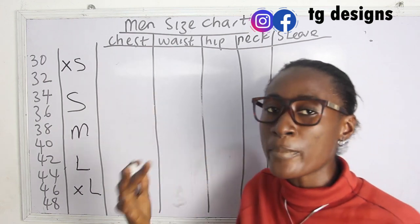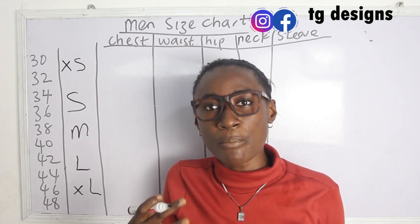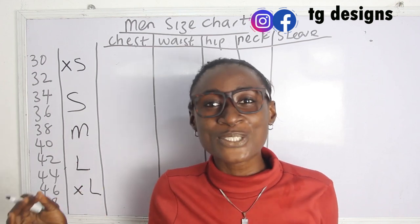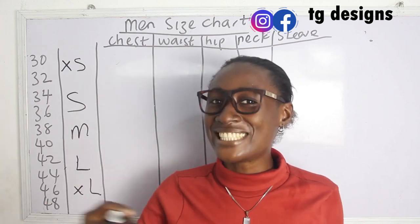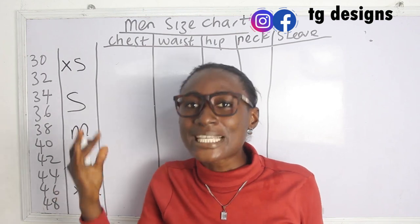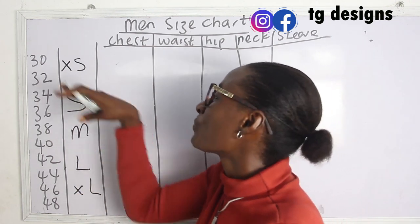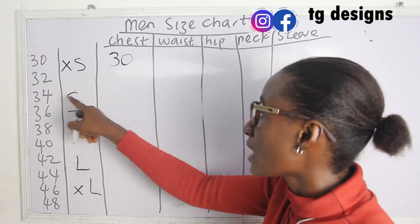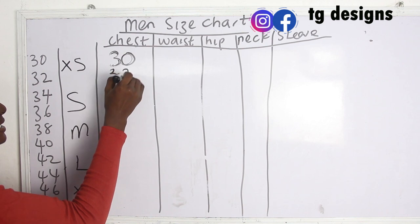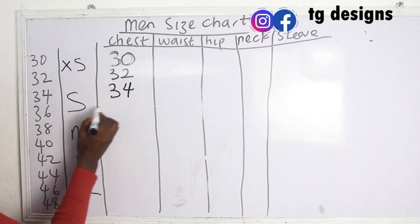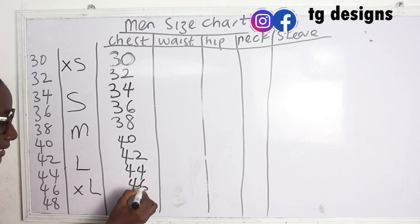For male, the chest measurement is what is referred to as the bust measurement for female. Guys don't have bust — they have chest. So for ladies we call it bust, while for guys it's chest. The chest measurements follow directly: size 30 has a chest of 30 inches, size 32 has 32 inches, and so on up through 34, 36, 38, 40, 42, 44, 46, and 48 inches.